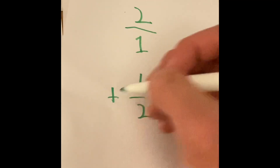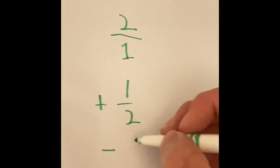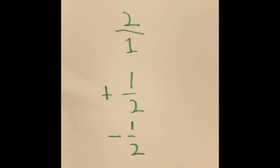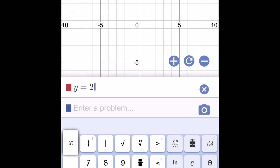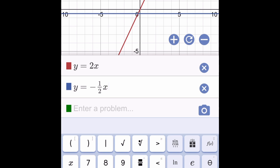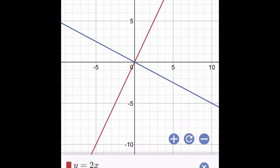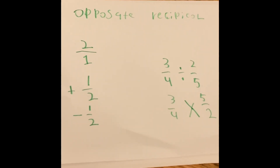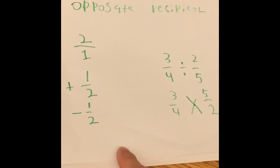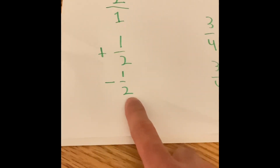Since 2 over 1 is a positive number, we have to turn it into a negative number. So the opposite reciprocal of 2 is negative 1 over 2. Looking at the graph from the previous clip, the two lines were perpendicular to each other because we found the opposite reciprocal of the other slope.